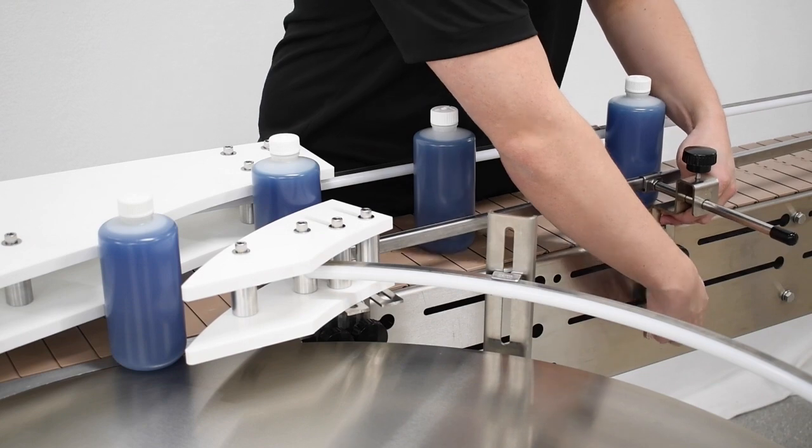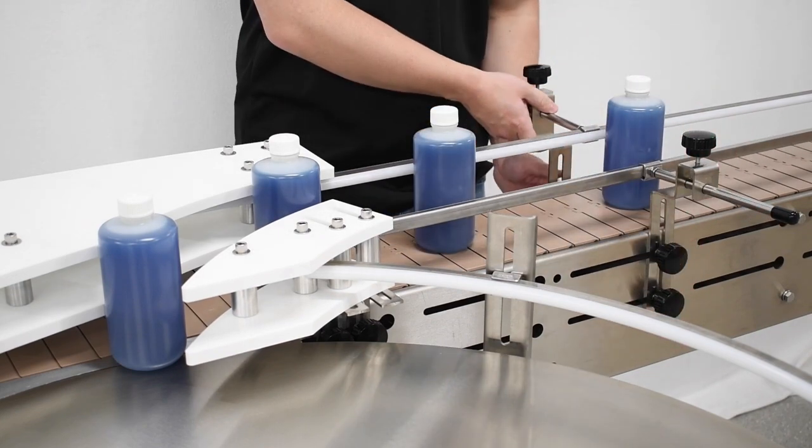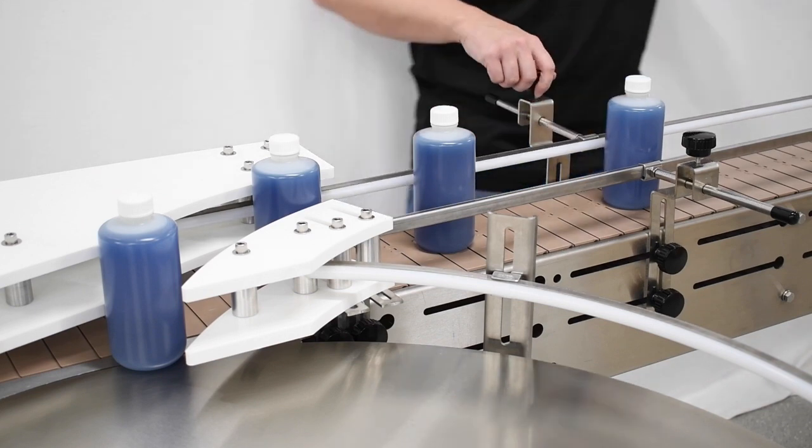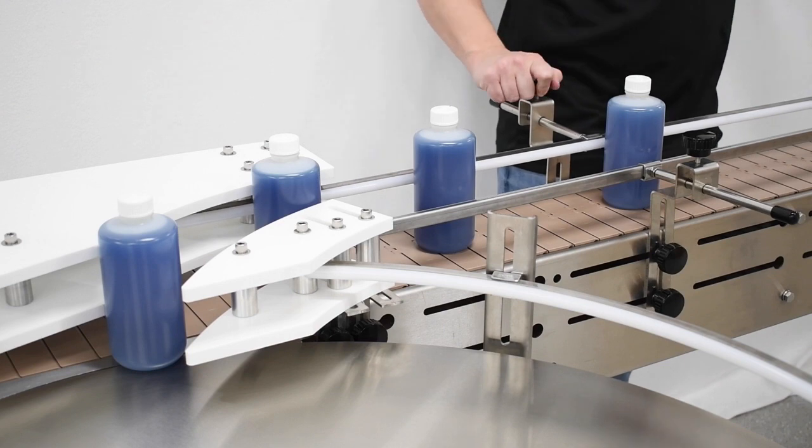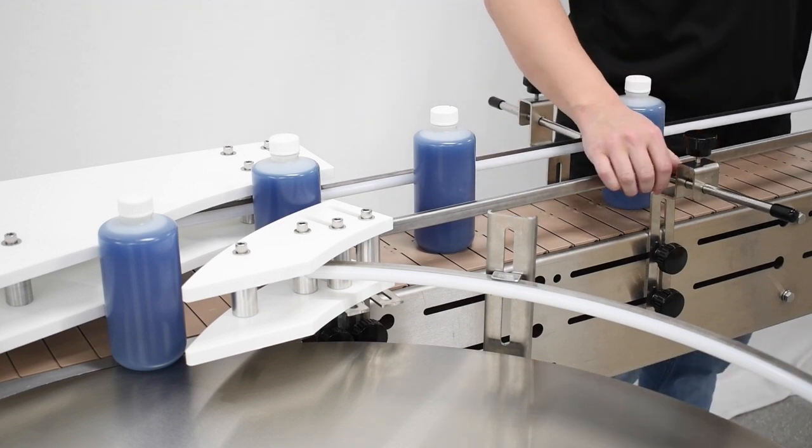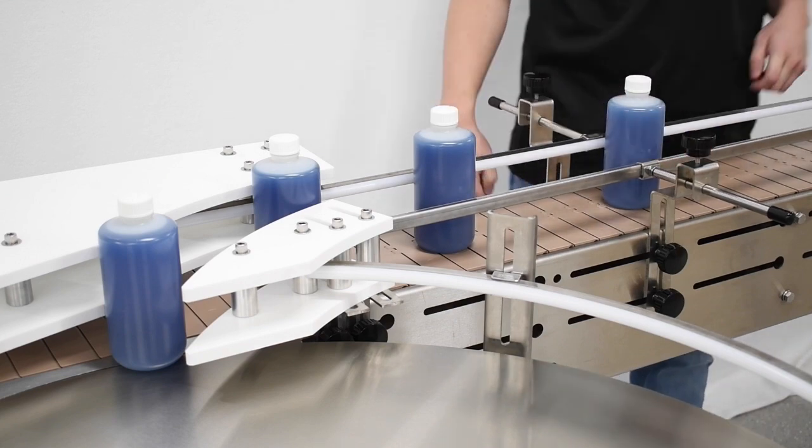To adjust height of the conveyor guide rails, loosen the black knobs on the sides and slide the guide rails up and down along the mounting slots. To adjust the width, loosen the black knobs on top of the brackets to allow the mounting rods to slide in and out. Once the conveyor guide rails are properly adjusted, make sure the black knobs have been tightened.